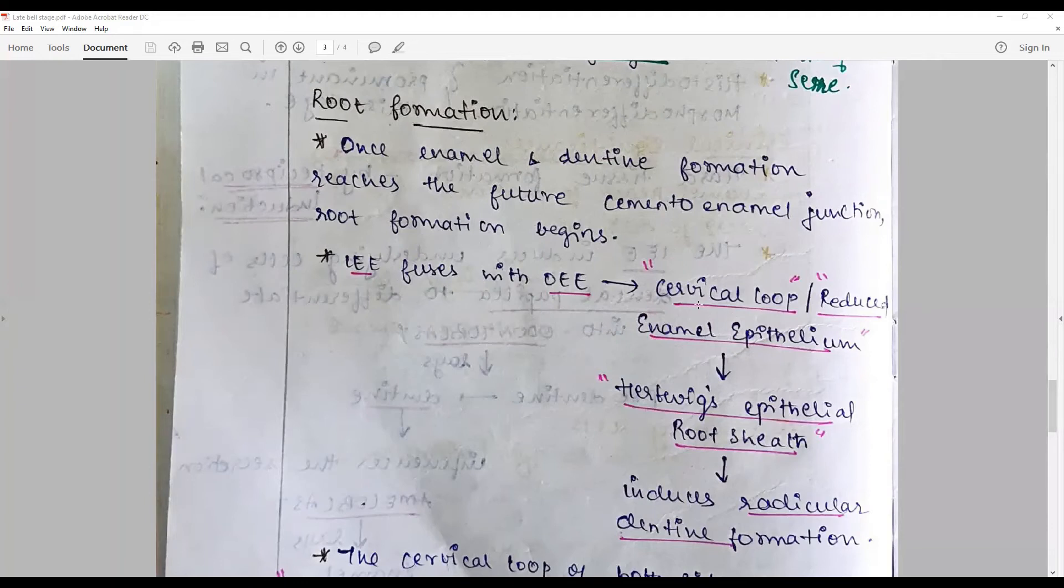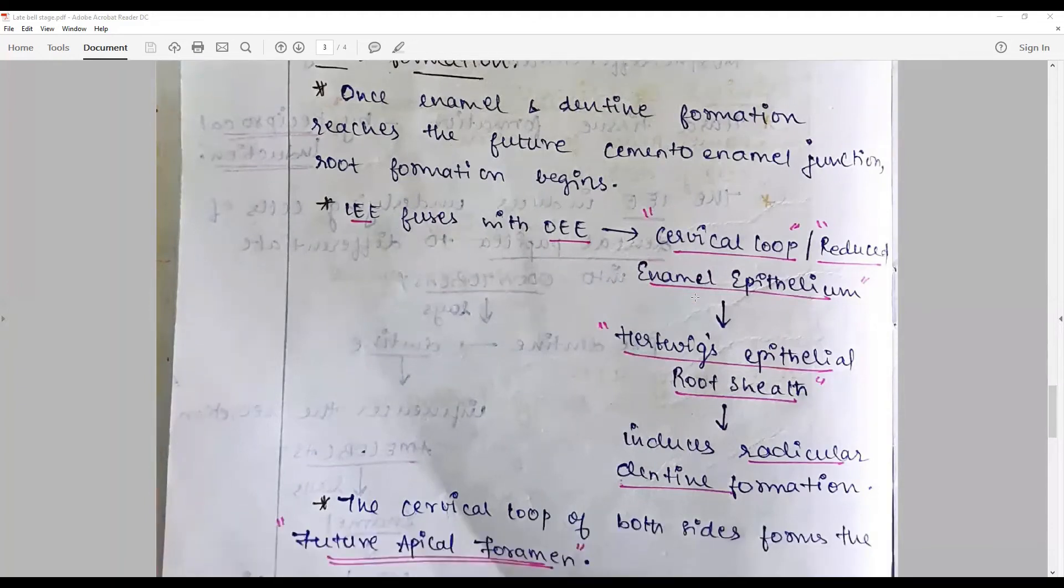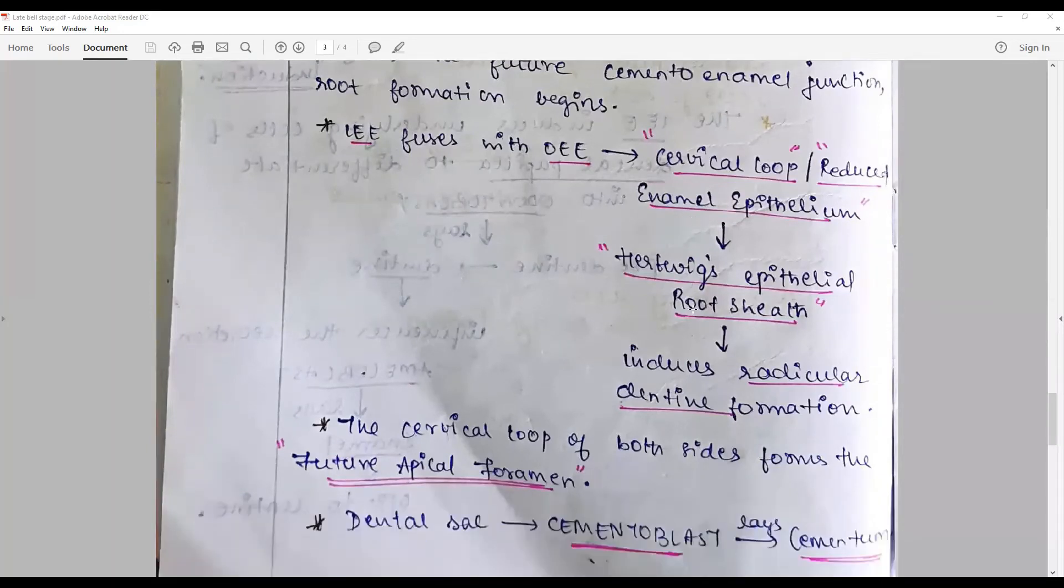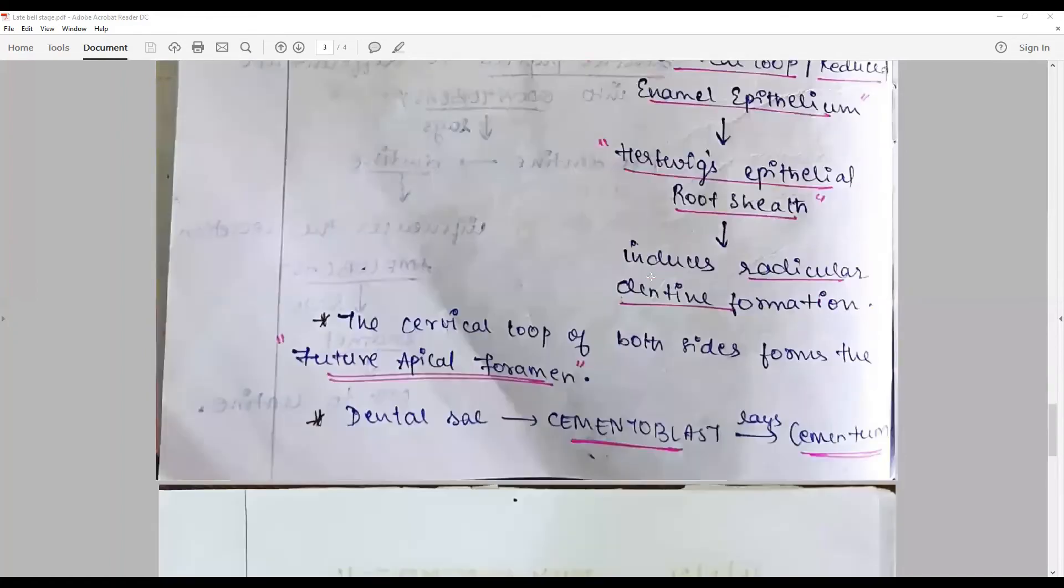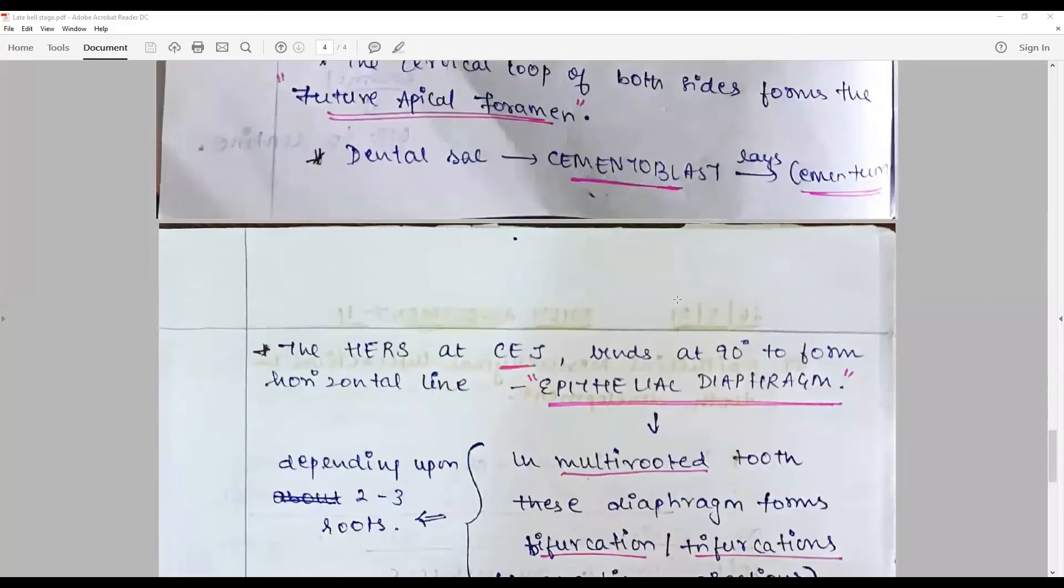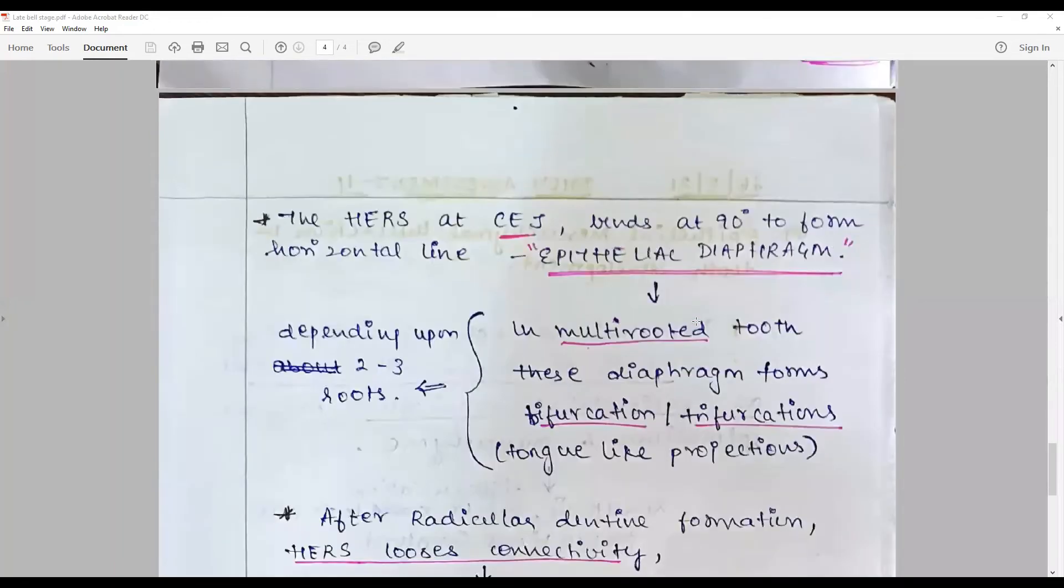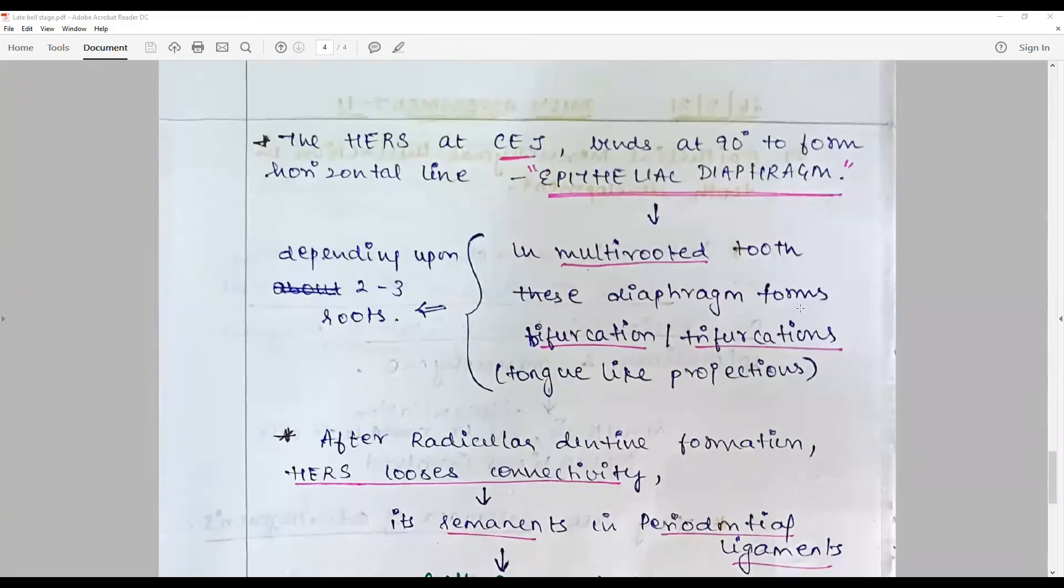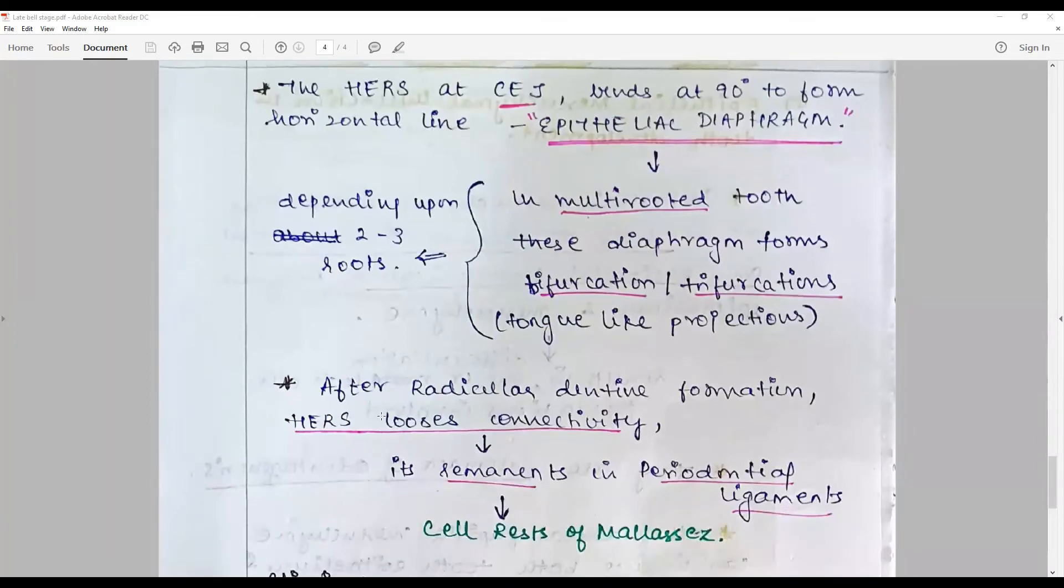Cementoblasts are differentiated from the dental sac which lays down the cementum. And HERS at CEJ bends at 90 degrees to form a horizontal line or a plane of diaphragm called as the epithelial diaphragm. Depending upon the number of roots, there will be invaginations or tongue formation, bifurcations or trifurcations, tongue-like projections to form the multi-rooted or single-rooted tooth.